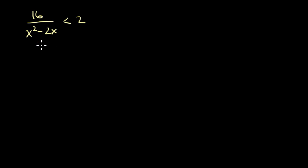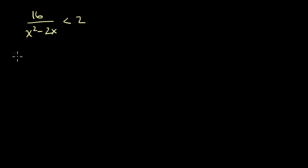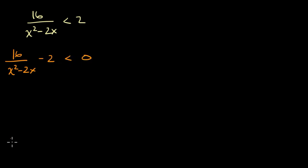What I want to first do is algebraically manipulate this so I have a zero on one side — I'll get the zero on the right-hand side. So let me subtract two from both sides. If I subtract two from both sides, I'm left with 16 over (x squared minus two x), minus two, is less than zero.